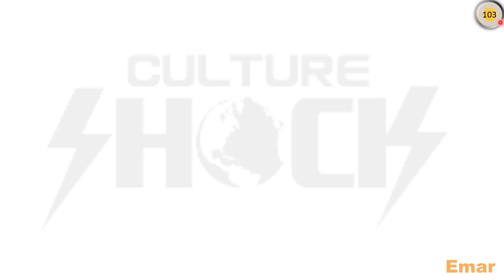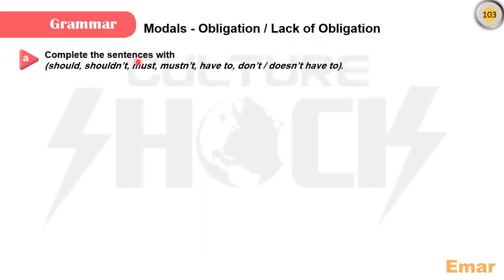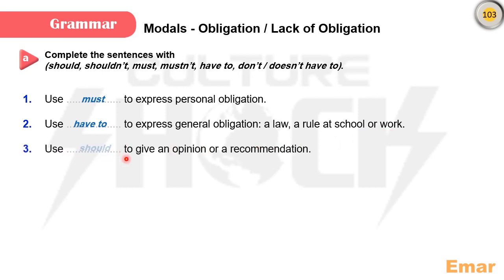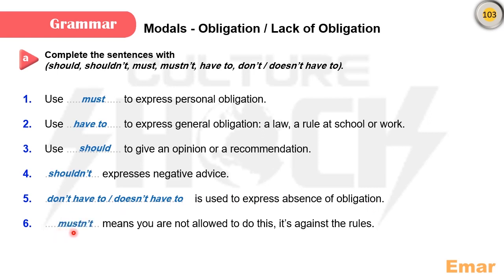Let's move back to the student's book, page 103: modals — obligation or lack of obligation. Exercise A: complete the sentences with should, shouldn't, must, mustn't, have to, don't have to, or doesn't have to. Use 'must' to express personal obligation. Use 'have to' to express general obligation — a law, a rule at school or at work. Use 'should' to give an opinion or a recommendation. 'Shouldn't' expresses negative advice. 'Don't have to' or 'doesn't have to' is used to express absence of obligation. 'Mustn't' means you are not allowed to do this — it is against the rules.